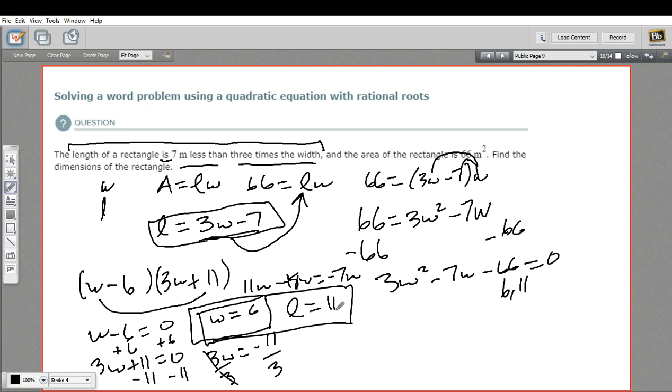And you'll notice the width times the length, 6 times 11, would be 66. That's what they told us in the beginning. So that checks out. So that is how to solve a word problem that involves a quadratic equation.